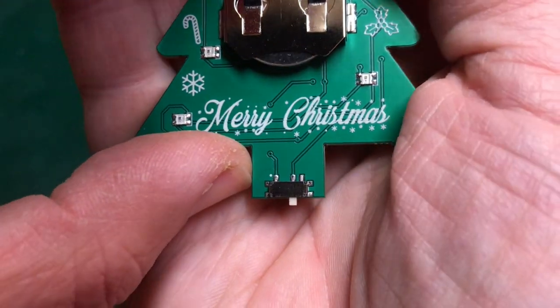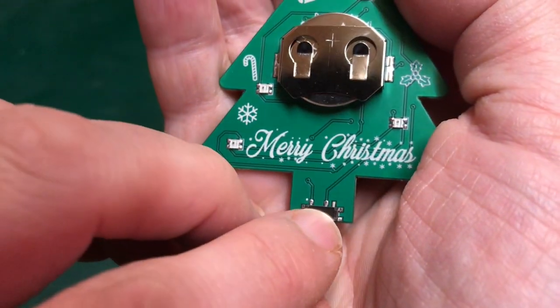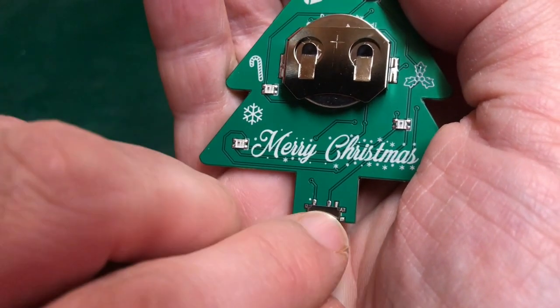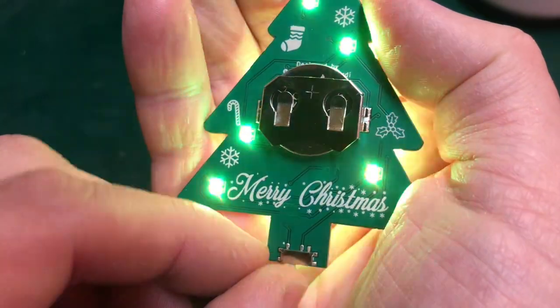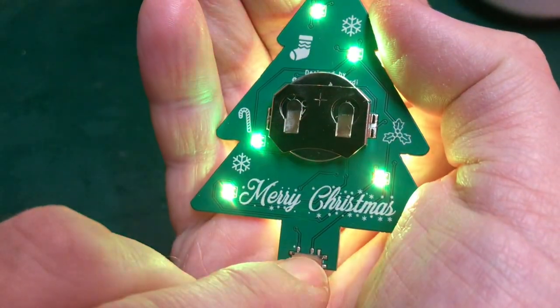So the way this switch works down here is it's just these two contacts. Well, there's three contacts. This one's unused. So that's in that position. And when we throw the switch, we obviously just join these two here and away the pulsing goes.